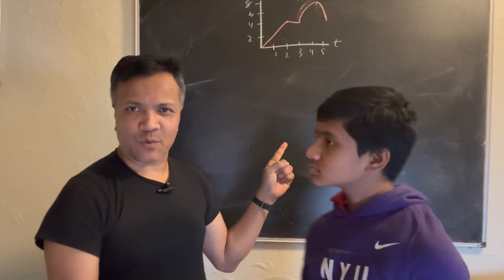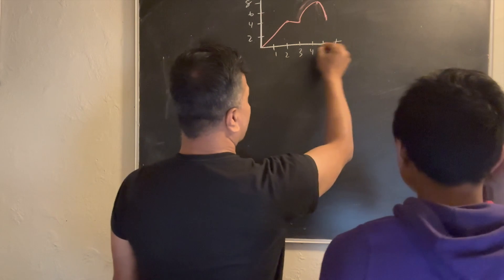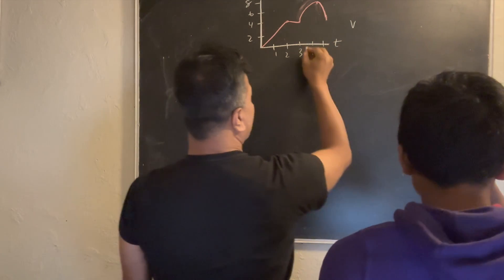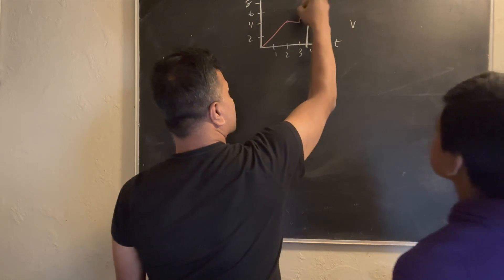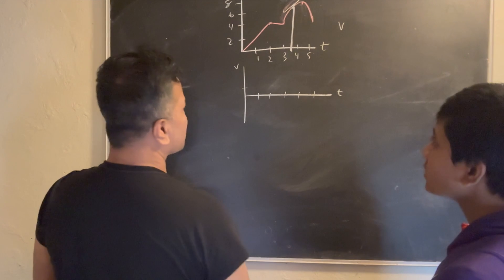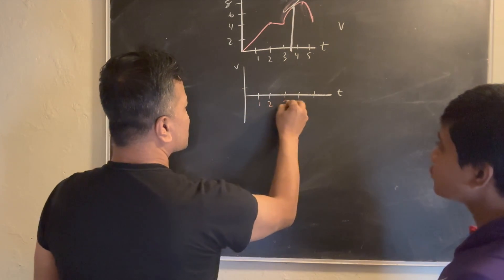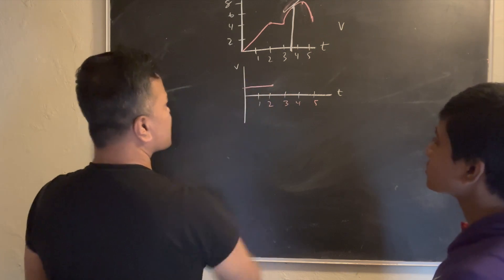This problem we're going to solve four different ways. What do you want to find? We're going to find the velocity when the time is 3.5. So what is the velocity over here? Isaac, what is the velocity from 0 to 2 seconds? It should be 4 divided by 2, which is 2 meters per second.